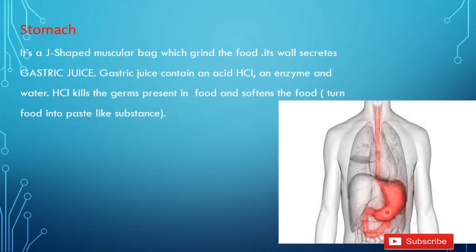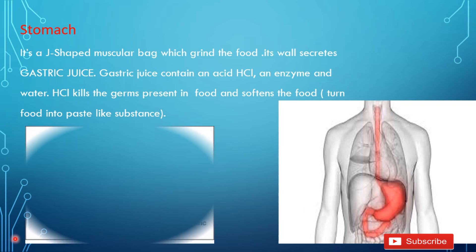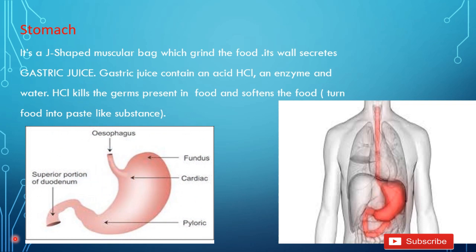The wall of the stomach secretes gastric juice. The gastric juice contains acid HCl, which kills the germs present in the food, softens the food, and turns food into a paste-like substance. Here you can see the shape of the stomach and the secretion called gastric juice.